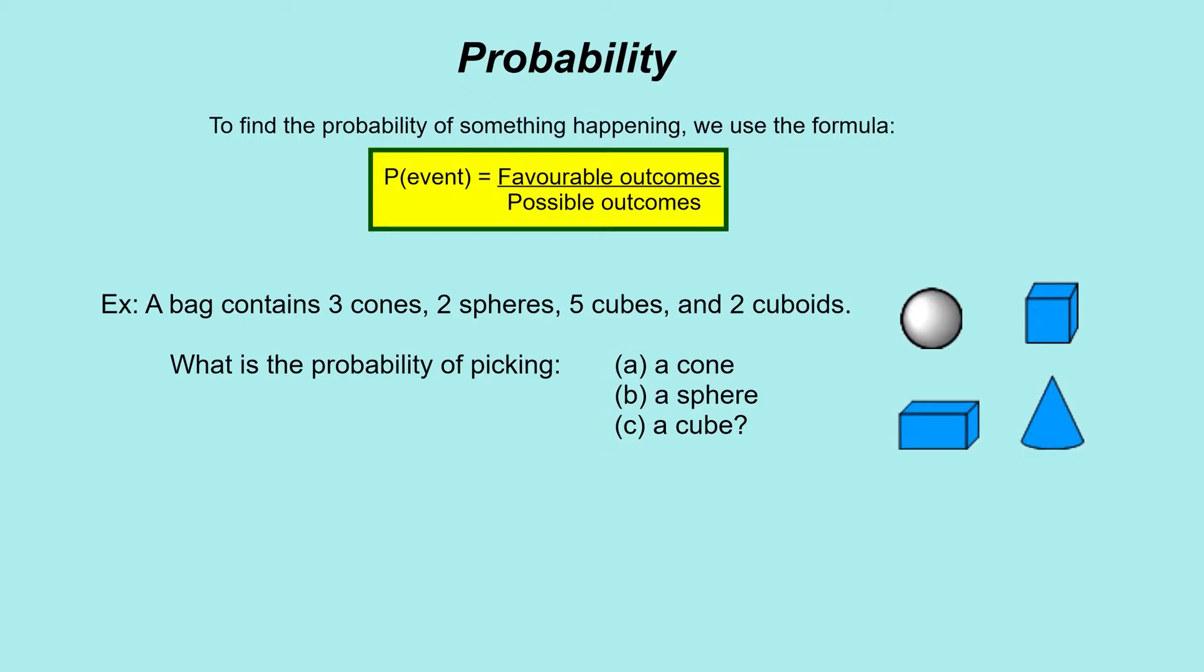It could be impossible or definitely going to happen, something along those lines, or have an even chance like flipping a coin. Not everything's as simple as that, so we've got some examples here that are going to show you how you calculate probabilities of different events happening and how you would lay that out mathematically. We've got this formula at the top: probability of an event happening is the favorable outcomes divided by the possible outcomes.